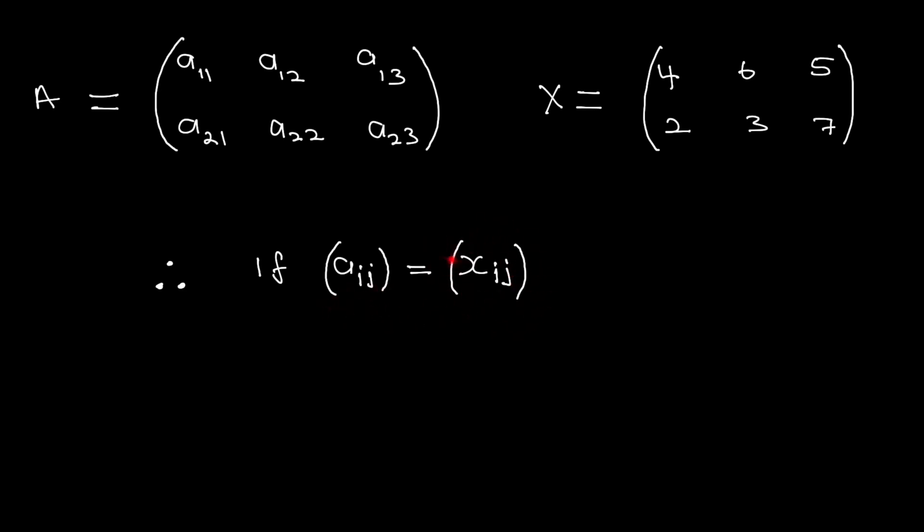So that's matrix A, that's matrix X, and they're both equal. That means that matrix is equal to that. Then corresponding element of matrix A is equal to corresponding element of matrix X.